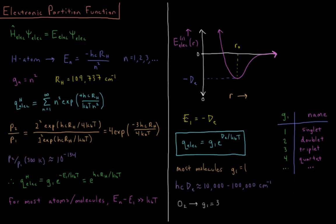The energy of our ground state is going to be minus dE, so our electronic partition function then is just G1 times e to the dE over kT. It's just the degeneracy times the Boltzmann factor for whatever our ground state is. Typically, hc times dE is going to be on the order of 10,000 to 100,000 wavenumbers, and we're not going to need to worry about anything other than the ground state for our given atom or molecule.